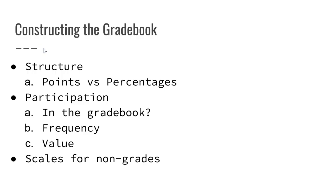The first thing I want to talk about is the structure of the gradebook. There are different ways of building one, and it really comes down to two approaches: the points version and the percentages version. The points version means all assignments in the course have some point value — those points add up to 100, 1000, or even 375 points depending on the instructor. Ultimately, there's some total amount of points and students gain points by completing assignments.